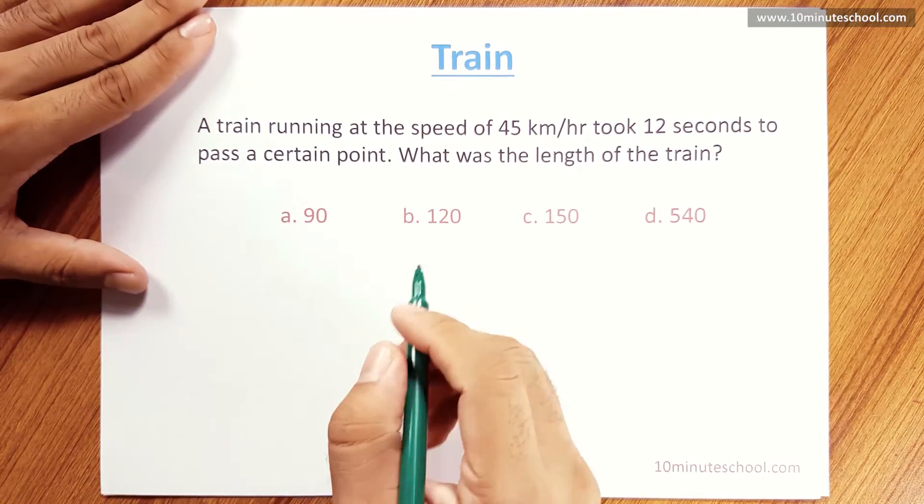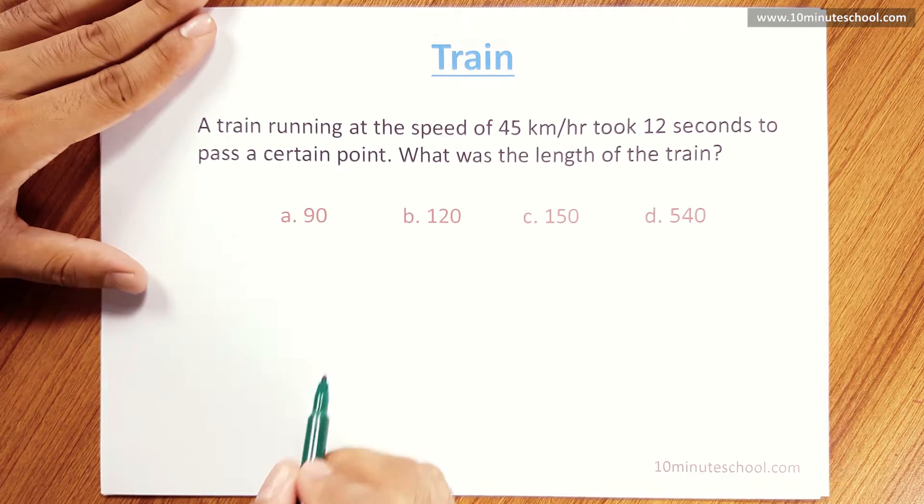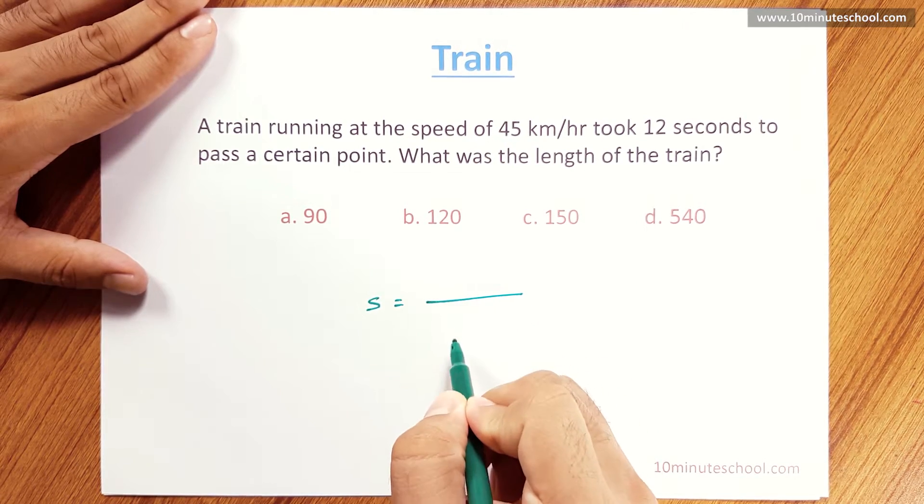Train. We know that train is a great shortcut which I have already said in the video. The shortcut is: speed is equal to distance by time.